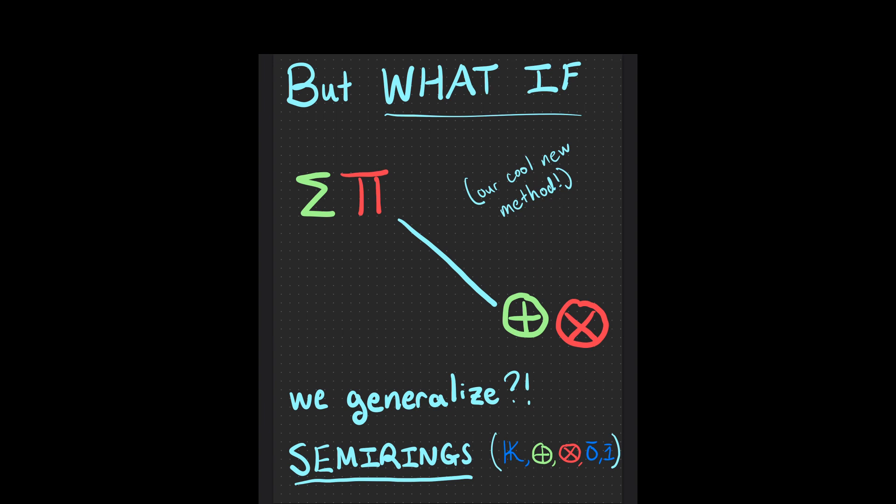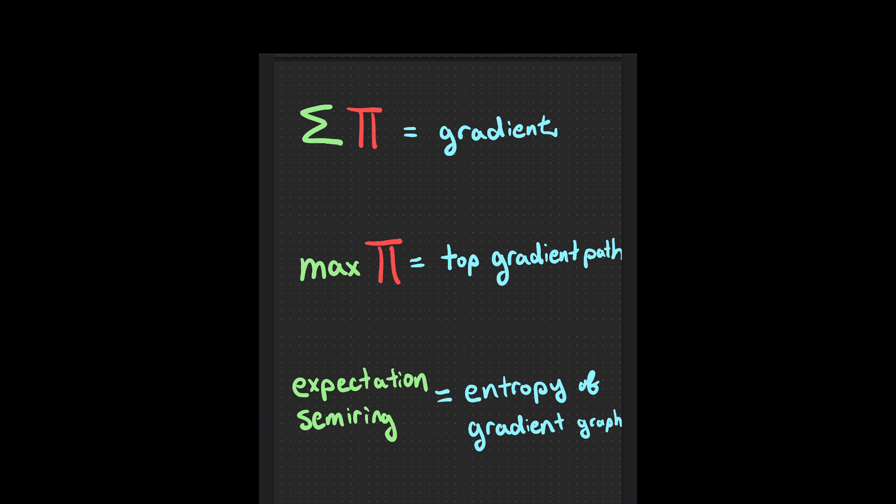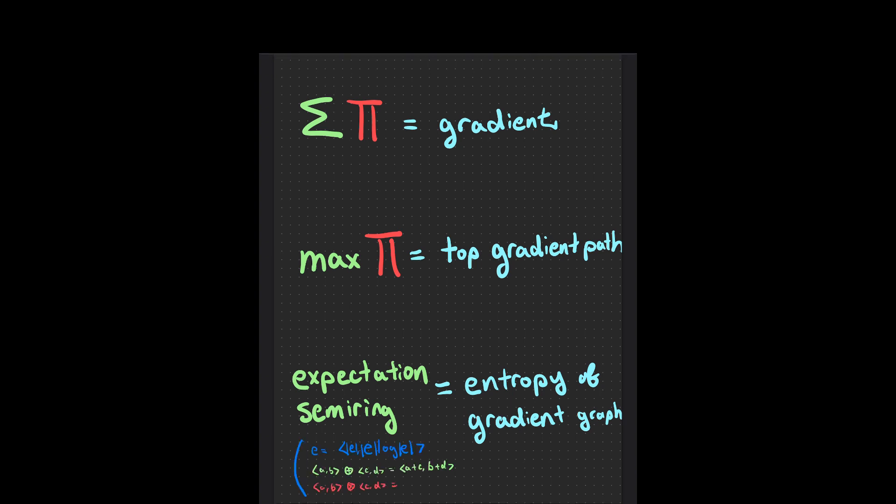Now, couldn't this work for any system with the distributive property? What if we freed ourselves from the limits of the sum and product over reals and generalize to something more? The answer is an algebraic structure called a semi-ring, which has all these nice properties and the key constraint that whatever your sum and product operation are, they have to be distributive, because that's what lets backpropagation work.